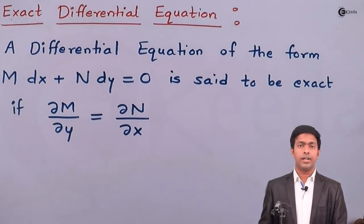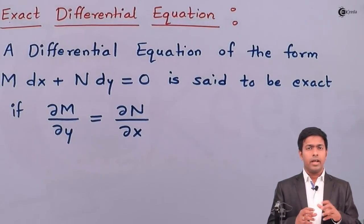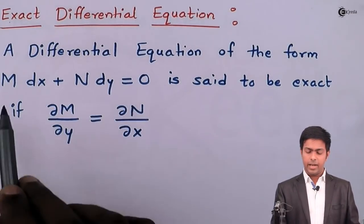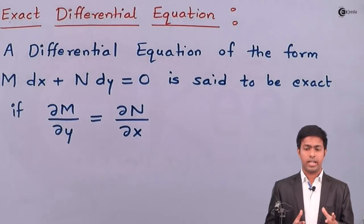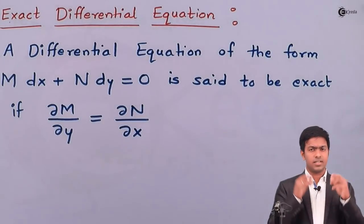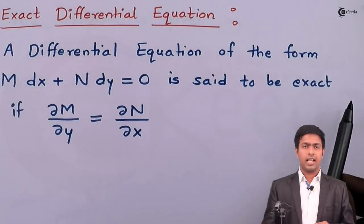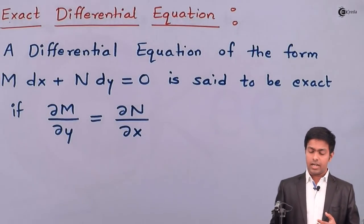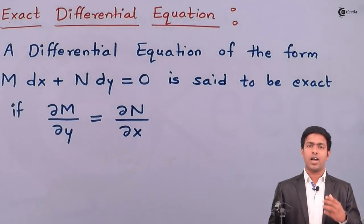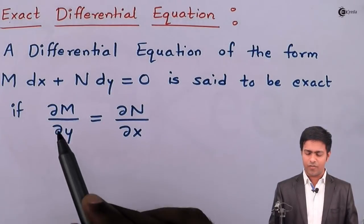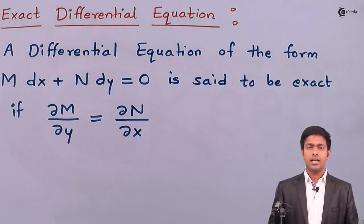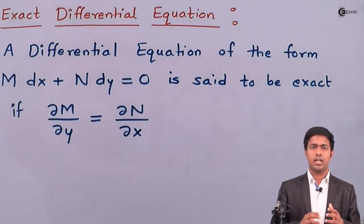The definition of an exact differential equation is as follows: any differential equation of the form M dx + N dy = 0, where M and N are functions of x and y or can be constants, is said to be exact provided it satisfies the condition that ∂M/∂y equals ∂N/∂x. Here, the symbol ∂ denotes partial differentiation. When the partial differentiation of M with respect to y equals the partial differentiation of N with respect to x, the equation is exact.